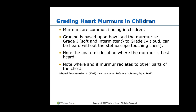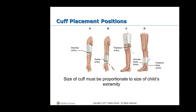Regarding heart murmurs: at this point, I don't expect you to be able to grade a murmur. Being able to say yes or no there's a murmur is doing pretty well. If you're going to be a cardiac nurse, then absolutely you need to grade and identify murmur types, but don't spend a lot of time on that right now. For blood pressure, you can use brachial or tibial approach — normally either position A or D.